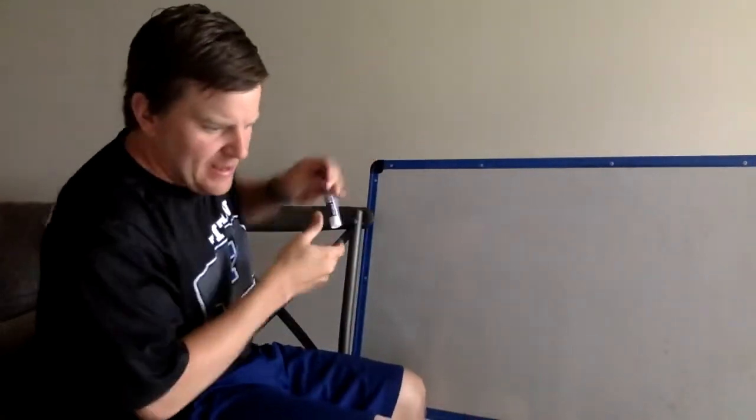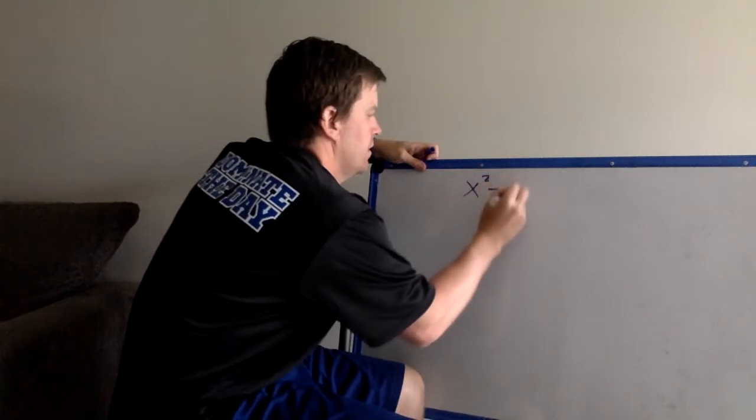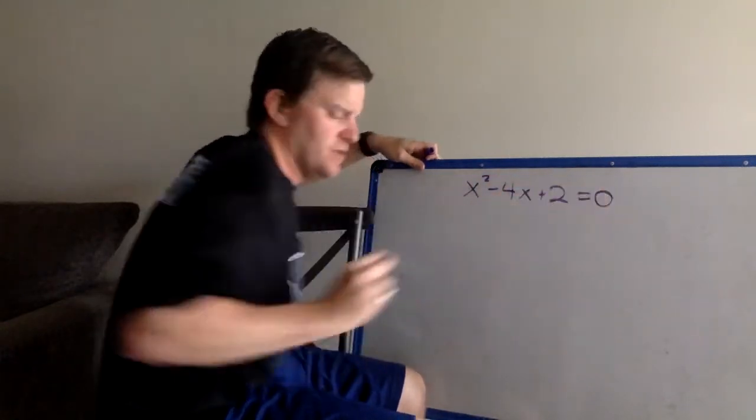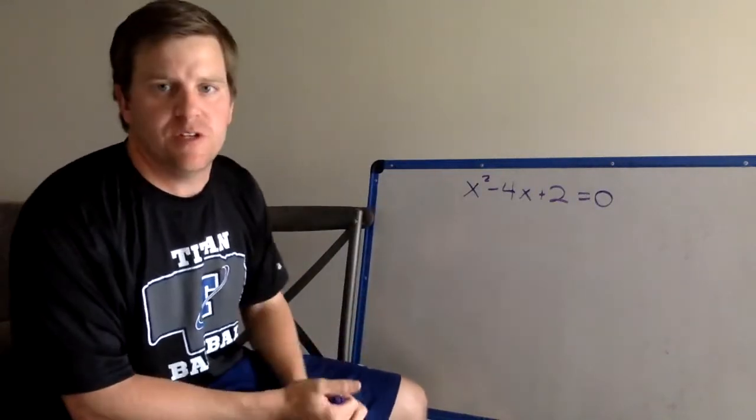Okay, let's try x squared minus 4x plus 2 equals 0. So again, we want to solve this quadratic equation using completing the square.